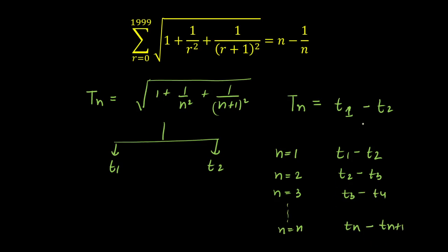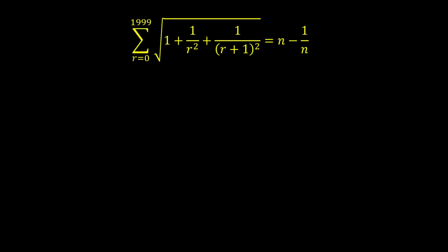The reason for breaking into a difference of two terms is that when you put n equal to 1 through n, you will see cancellation of alternate terms, and we get the sum as t1 minus t(n+1). So in similar fashion, I'm going to break the nth term. We replace r by n to get: root over 1 plus 1 upon n squared plus 1 upon (n+1) squared.